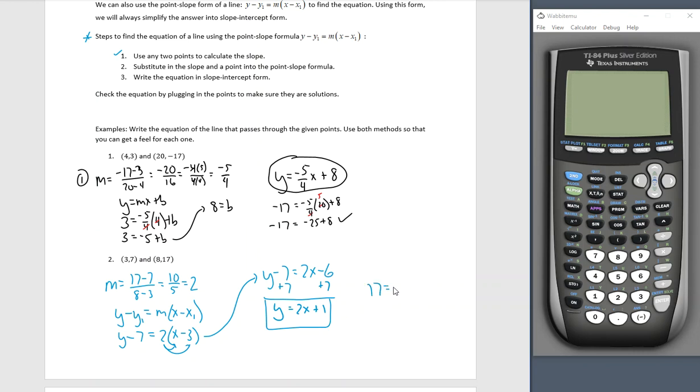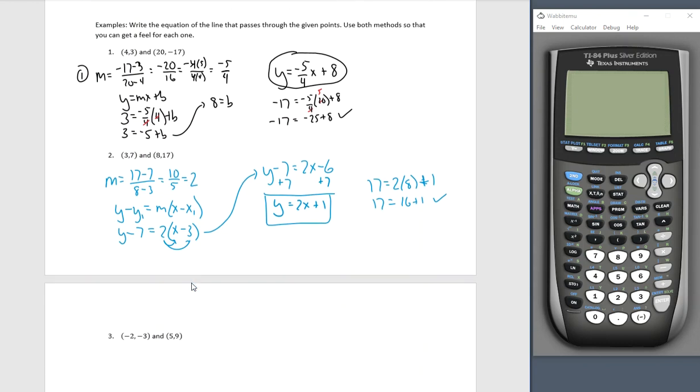Let's make sure this 8, 17 works out. If y is 17, is x actually 8? 17 equals 16 plus 1. That is true. So we have substituted, we've simplified, and we even went above and beyond and we checked our answer. So either of these two methods are going to get you to the same place each and every time.